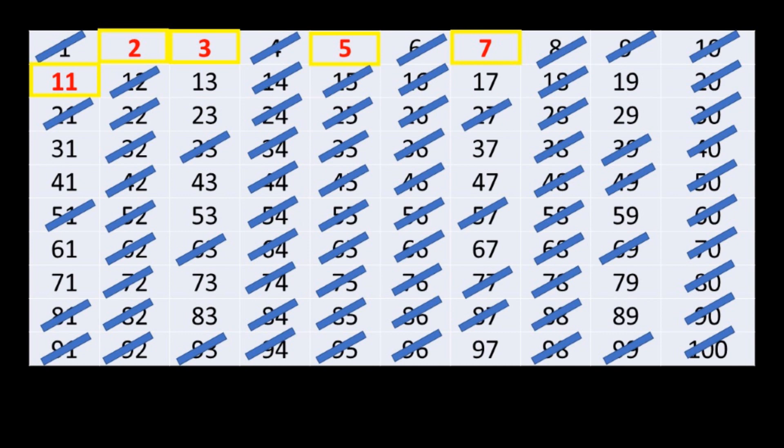The next number is 11, we circle it and cross out all its multiples. We continue like this for 13, 17, 19, 23, 29, 31, 37, 41, 43, and 47.